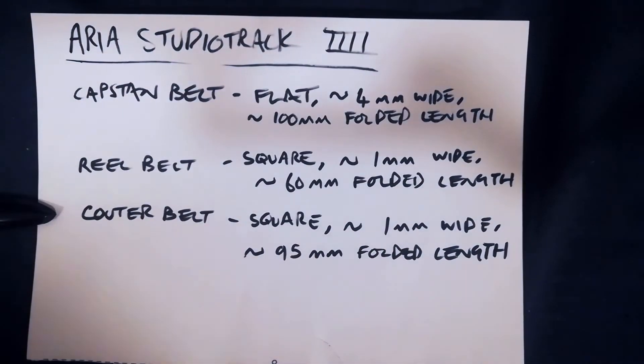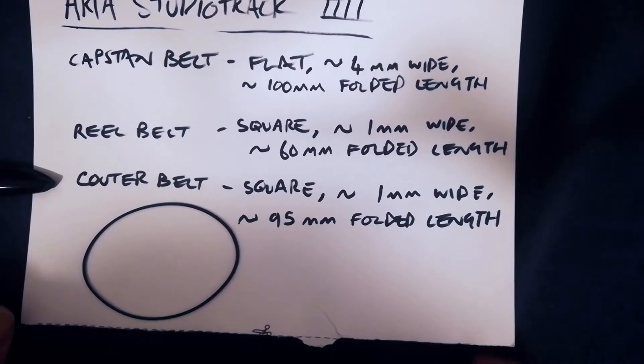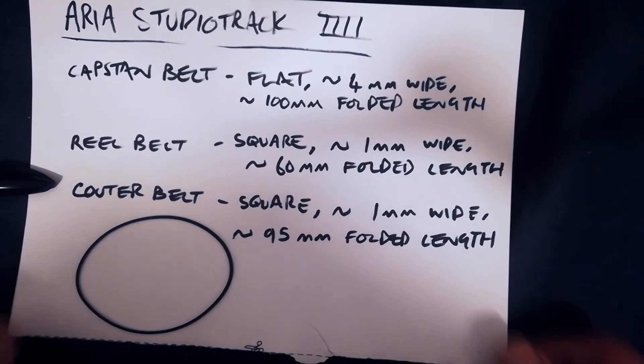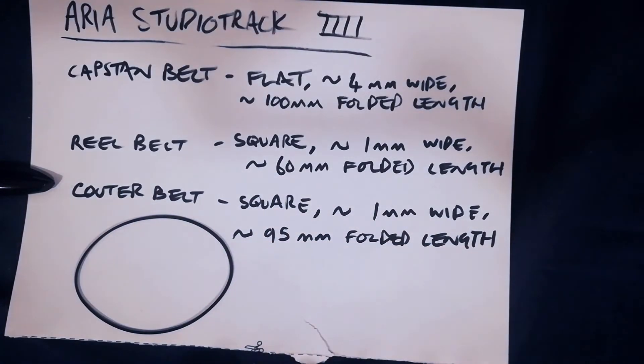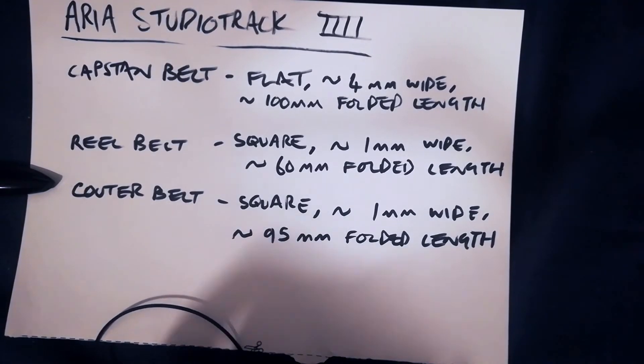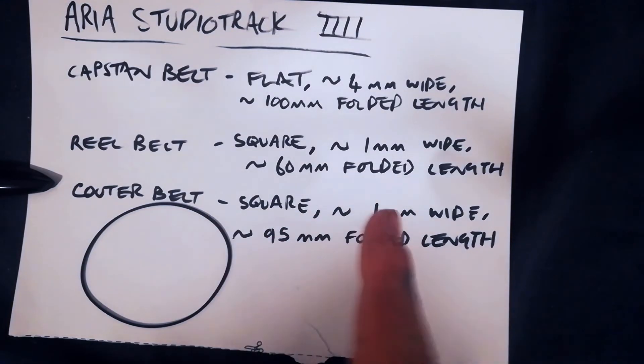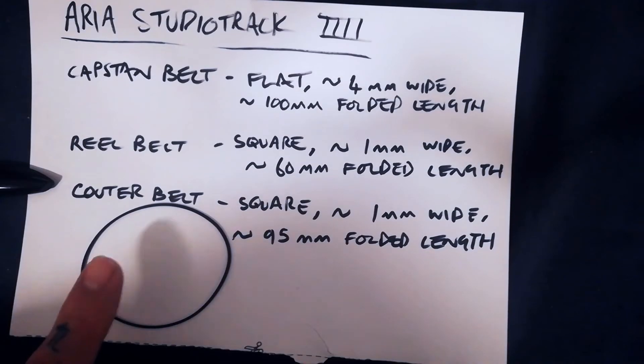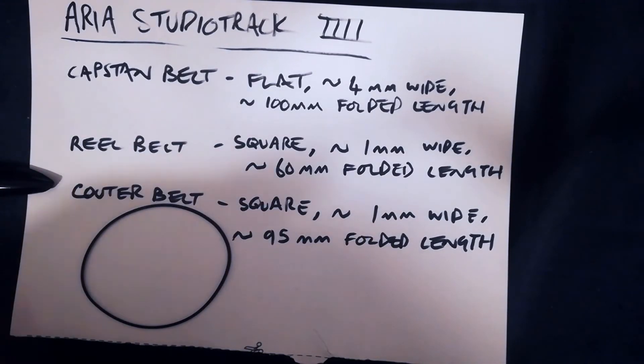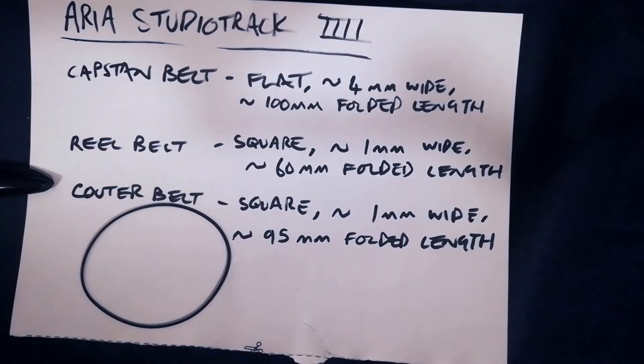And last of all we've got the counter belt. The counter belt is about 1mm square in cross section. And it's about 95mm in folded length. This one is dry and definitely going to be replaced. So perhaps 90mm or less is what you want in order for there to be adequate tension on the pulley. If that isn't tight enough or if it's absent, then the transport will start to work but then auto stop will constantly be evoked because the counter isn't advancing.